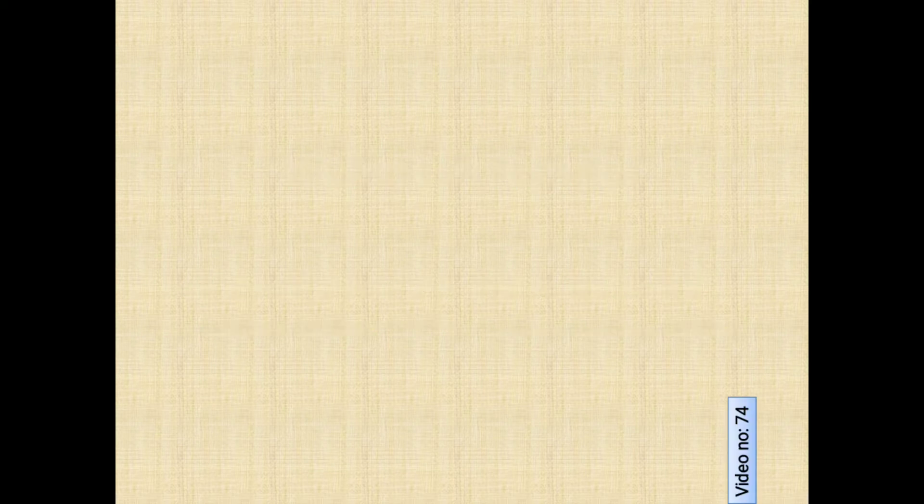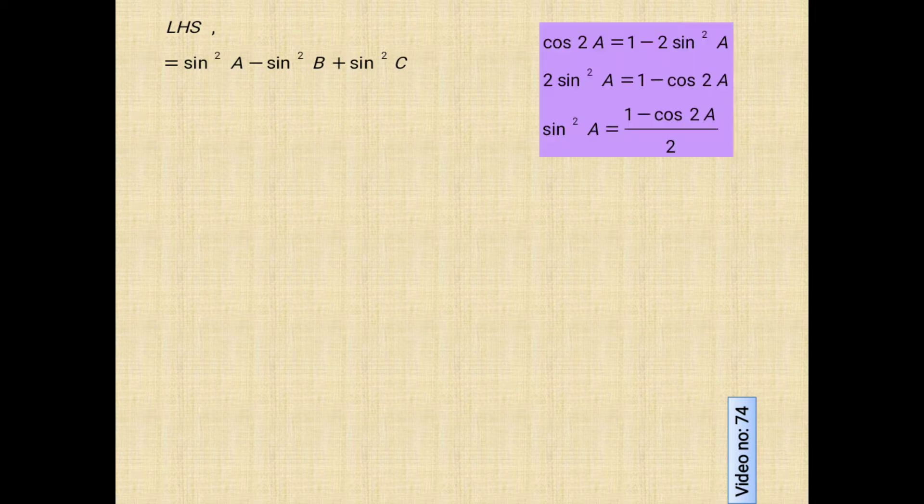Okay, here we go. I'll start from left-hand side. We have it as sine square A minus sine square B plus sine square C. Now recalling the formula of cos 2A having sine A in it, we get this one. Exchanging the places of 2 sine square A and cos 2A, we say 2 sine square A equals 1 minus cos 2A. And finally, taking 2 on the right side, we can write sine square A as 1 minus cos 2A by 2.